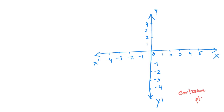All right, this Cartesian plane — this x-axis is linear, there is a two-dimensional plane, so this is what a Cartesian plane is.